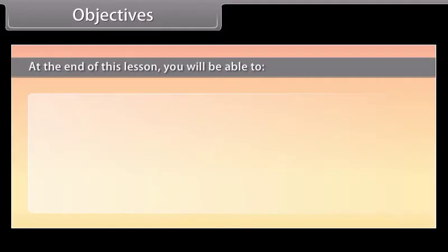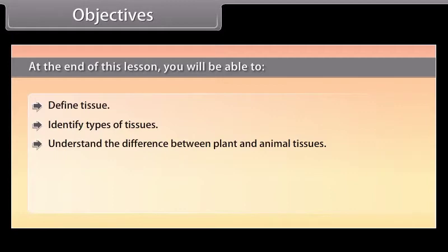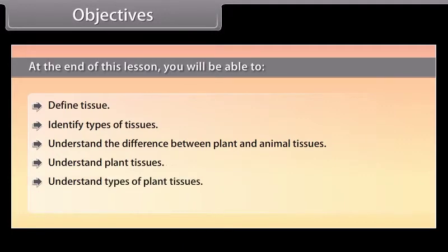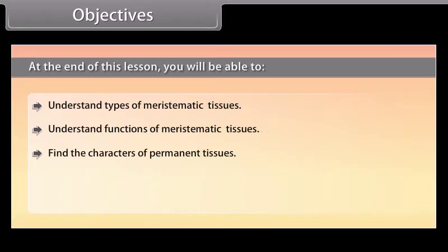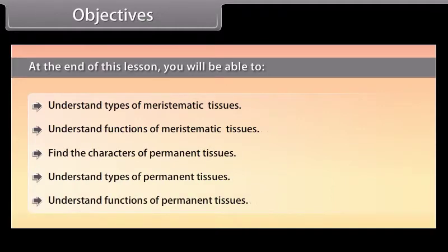At the end of this lesson, you will be able to define tissue, identify types of tissues, understand the difference between plant and animal tissues, understand plant tissues and types of plant tissues, find the characters of meristematic tissues, understand types and functions of meristematic tissues, find the characters of permanent tissues, and understand types and functions of permanent tissues.